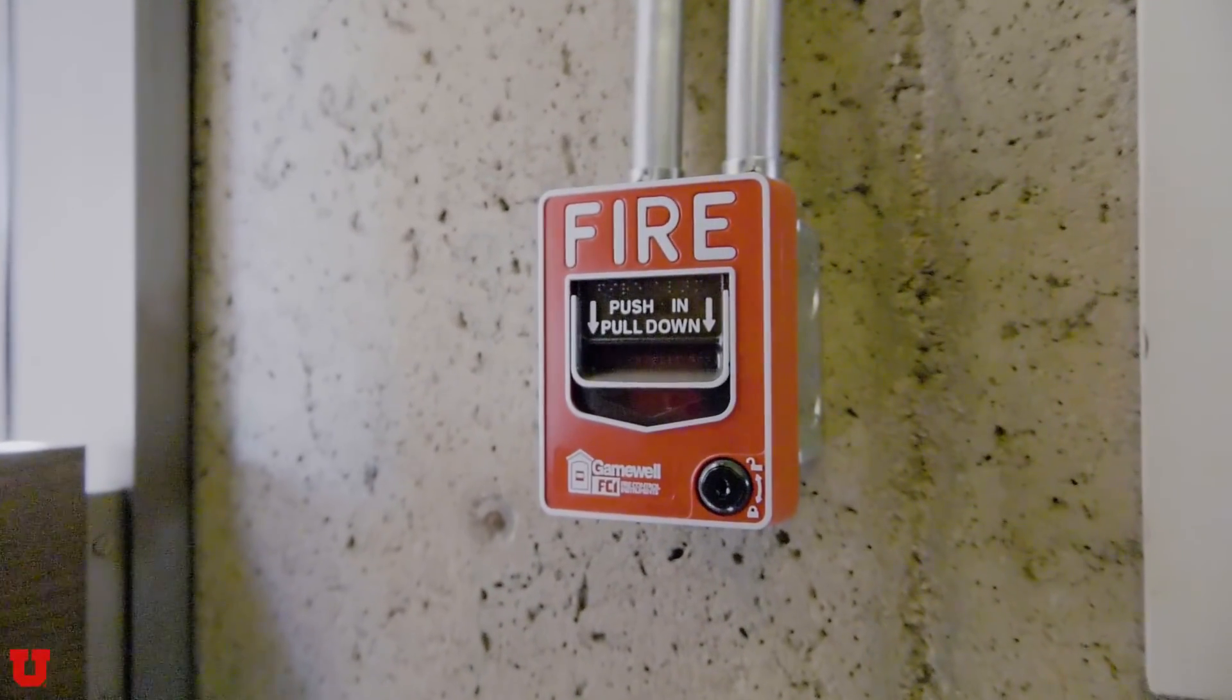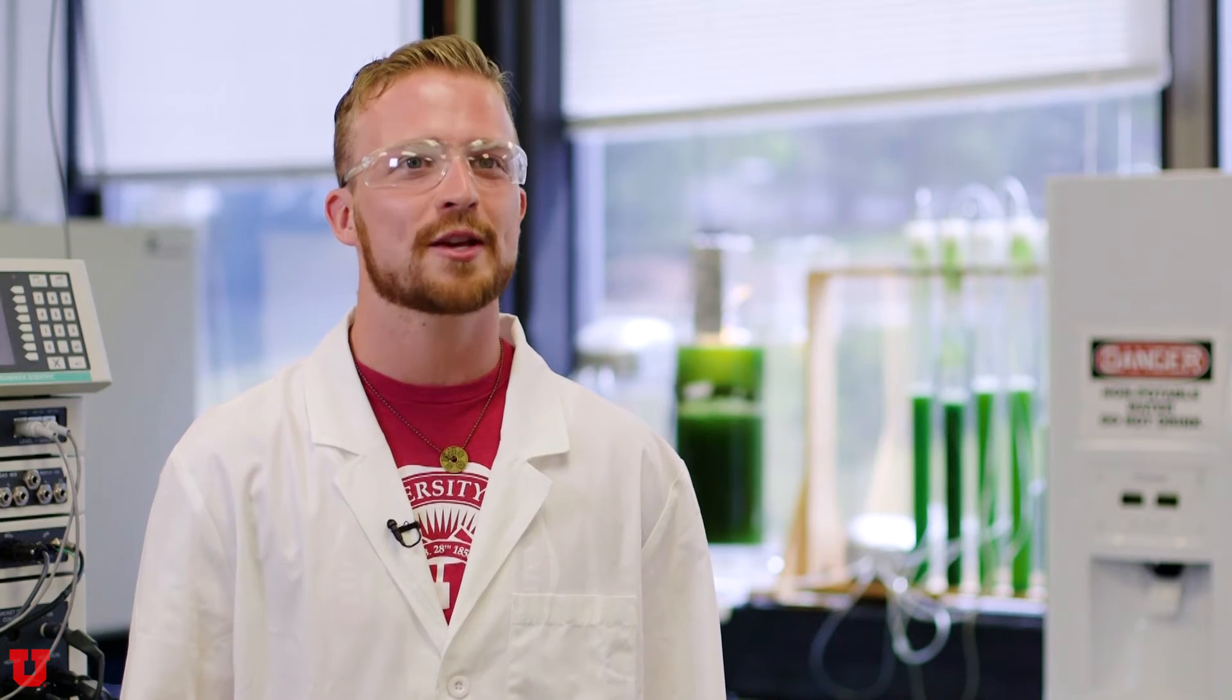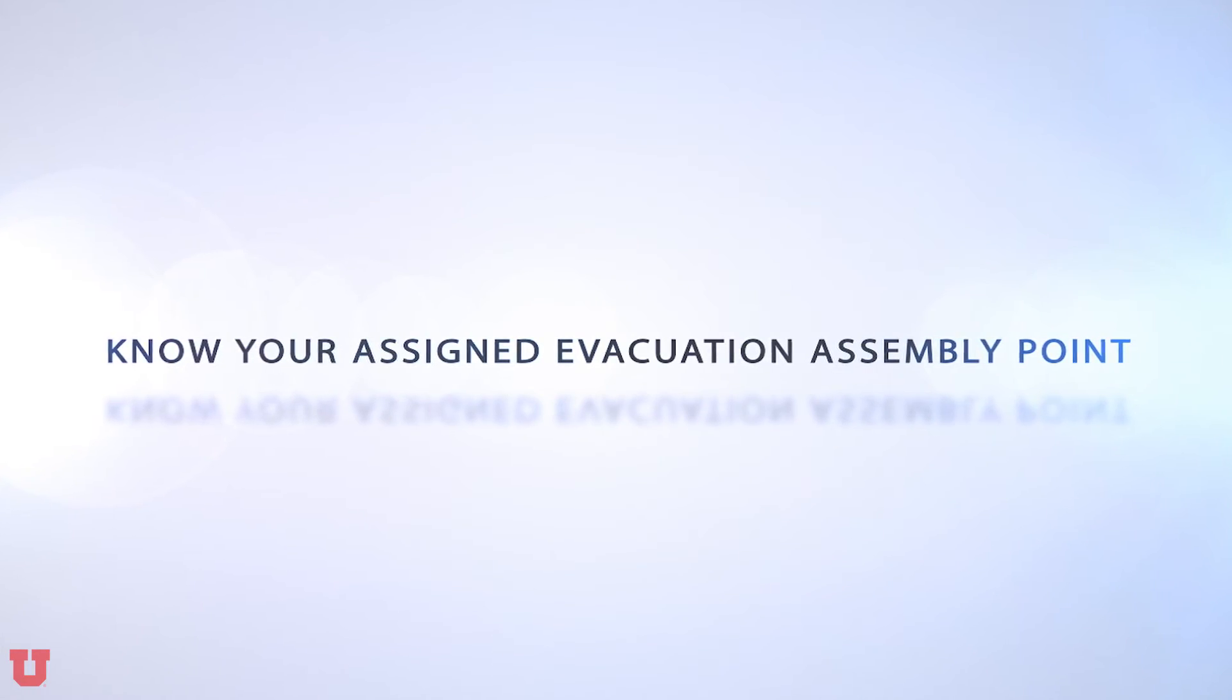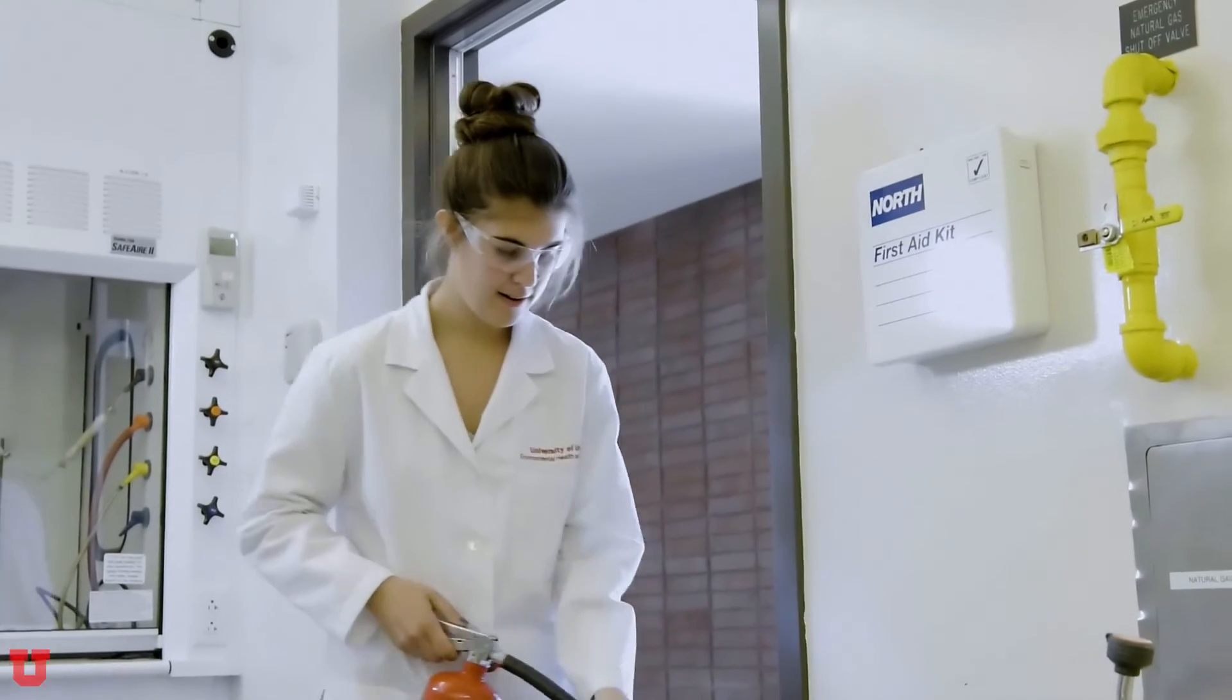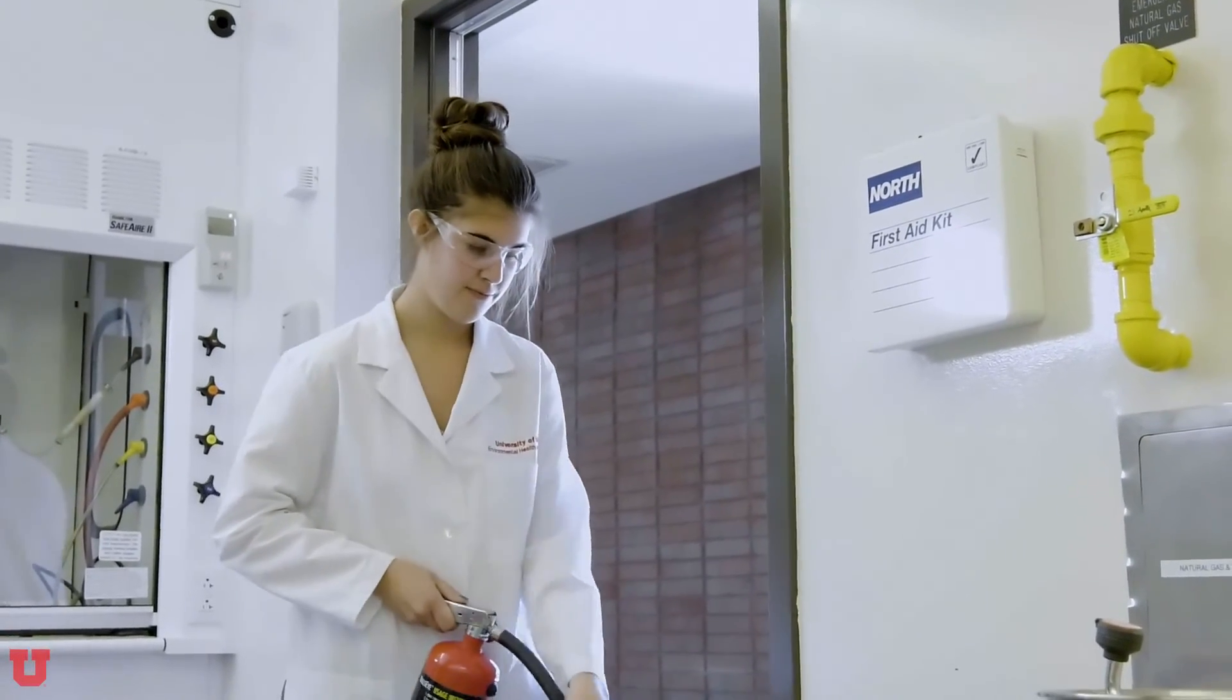As you exit, if it already hasn't been done, pull the fire alarm system. Proceed to the assigned evacuation assembly area and check in. If the fire is small and if you have been properly trained, by all means use a fire extinguisher. After using one extinguisher and the fire is not out, proceed to the exit and as you do, pull the fire alarm system.